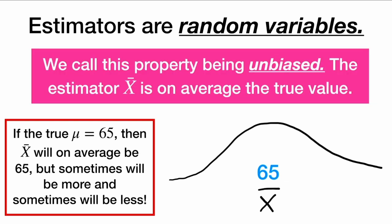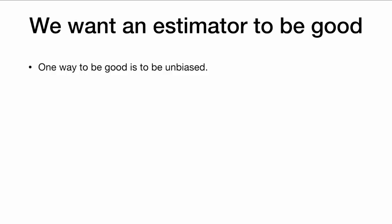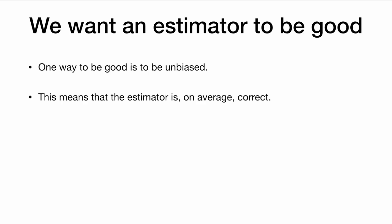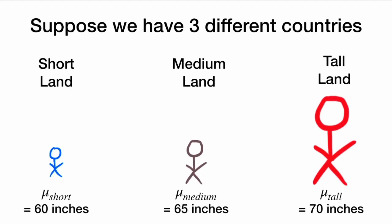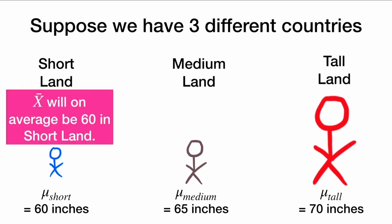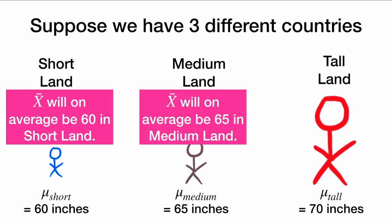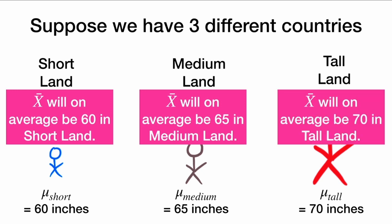We call this property being unbiased — the estimator x-bar is on average the true value mu. An estimator being unbiased means it is unbiased for all possible values of the parameter mu. For example, suppose we have three different countries: short land, medium land, and tall land. In short land, where the true average height is 60 inches, x-bar will on average be 60. In medium land, where it is 65 inches, x-bar will on average be 65. And in tall land, where the average is 70 inches, x-bar will on average be 70. This is being unbiased.